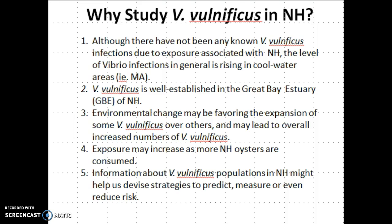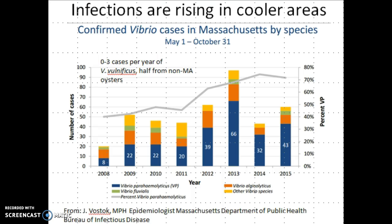Infections are rising in cooler areas. This is a graph of data from Massachusetts, which has cooler water similar to New Hampshire. From 2008 up to 2015, we're seeing some suggestion of increased overall levels of Vibriosis. In particular, we're seeing an increase in the proportion of Vibriosis caused by Vibrio parahemolyticus. One of the things we know about Vibrio parahemolyticus is that it is often found in association with Vibrio vulnificus. So although Vibrio parahemolyticus is causing most of the Vibrio-associated disease in Massachusetts, its presence and apparent expansion is a good indication that we should also be concerned about Vibrio vulnificus in these cooler areas.